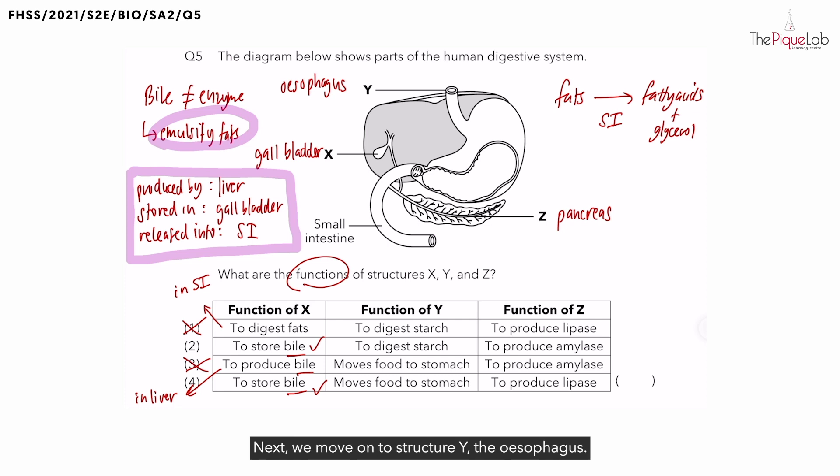Next, we move on to structure Y, the esophagus. Does digestion of starch happen in the esophagus? No. Digestion of starch happens in the mouth. So we can eliminate these two options. So what is the role of the esophagus? Does it release any enzymes? No, it doesn't. It just helps to move the food from the mouth to the stomach. So we are left with options three and options four.